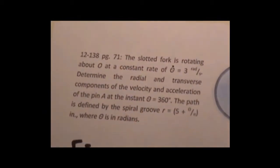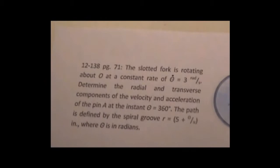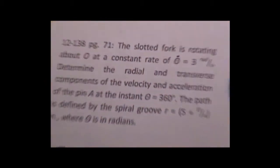The equation says the slotted fork is rotating about O at a constant rate of θ̇ equals 3 radians per second. So we'll write that down under the θ̇ place, make a little graph looking thing here.